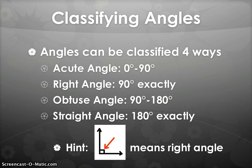The acute angle is 0 degrees to 90 degrees. A right angle is 90 degrees exactly, not 89.9, not 90.1. It's 90 degrees exactly every time. The obtuse angle is 90 degrees to 180 degrees, and a straight angle is 180 degrees exactly.